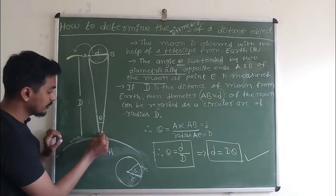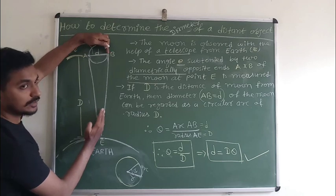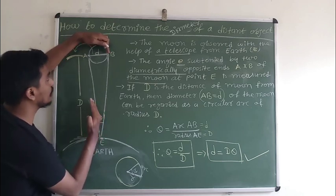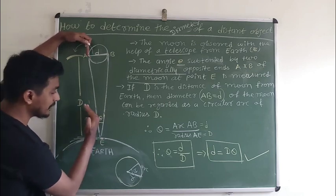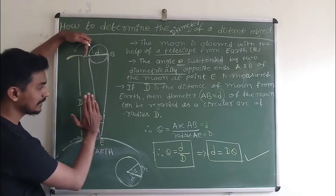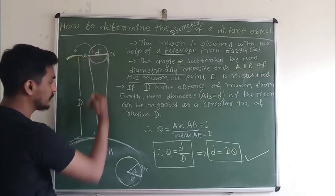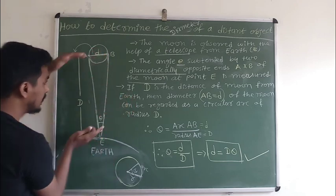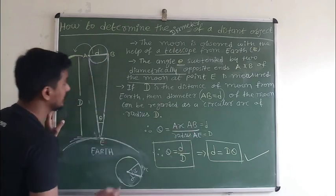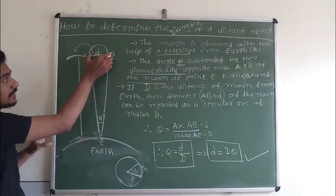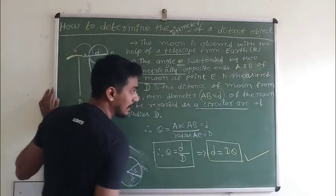It means first we observe with the help of the telescope one diametrically opposite point of the moon, and then we move our telescope to the other point, and by moving this we can measure theta — we can measure this angle theta. We know that in the last lecture we calculated the distance of the moon from the earth. So if D is the distance of the moon from the earth, then diameter AB of the moon can be regarded as a circular arc.